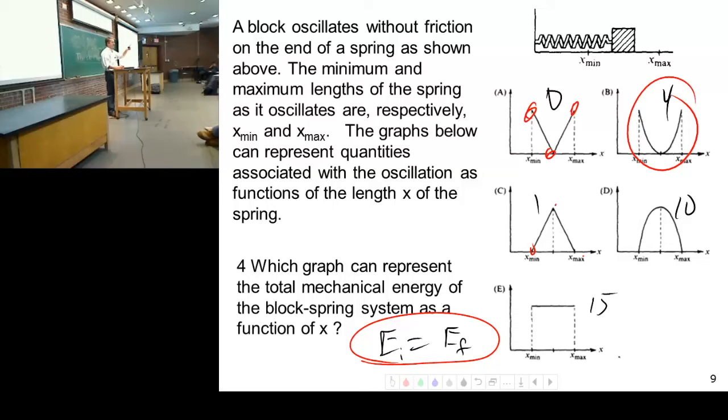The total energy never changes. What does change? The amount of potential and the amount of kinetic with respect to one another, but the total is always a constant number. So this one is a constant graph.